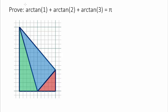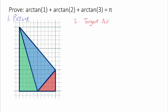In this video, we are going to prove this fascinating equation: arc tangent of 1 plus arc tangent of 2 plus arc tangent of 3 equals pi radians, in three different ways. The first way is by using a picture, which is the most elegant way for this particular equation. The second method will use the tangent addition identity, and the final method will use complex numbers.